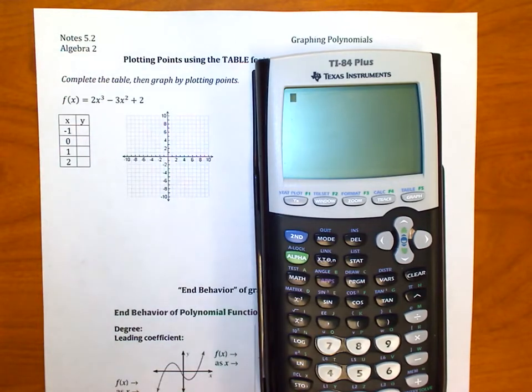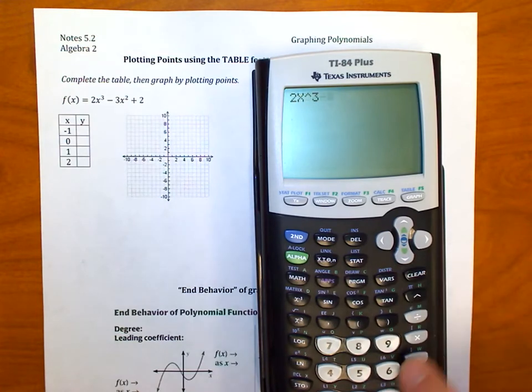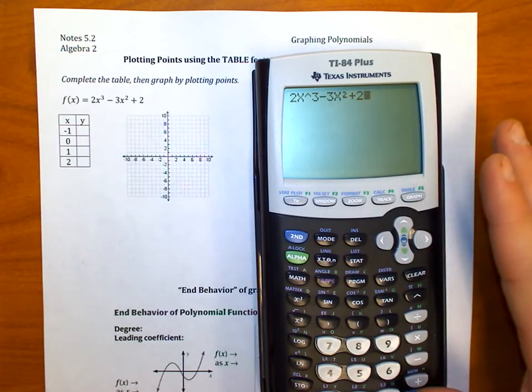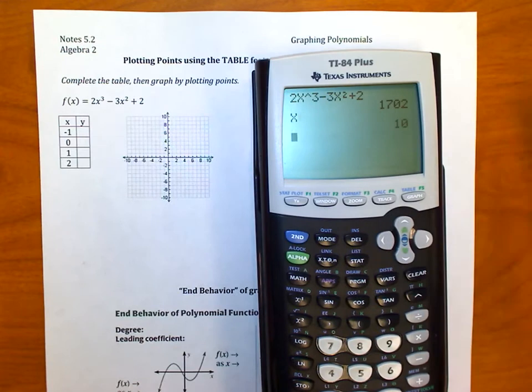And so basically what I'm going to do is, first of all, if I try to type in 2x cubed minus 3x squared plus 2, if I do that here, it's going to give me just a number in return, because x means something. I have no idea. In fact, we can find out. X means 10. I don't know why, but that's what it is. And so that really doesn't help us, because it doesn't give us any kind of graph.